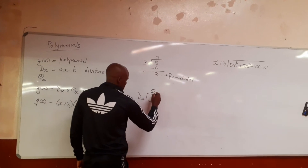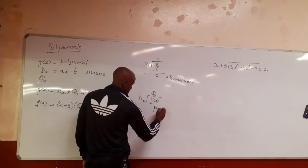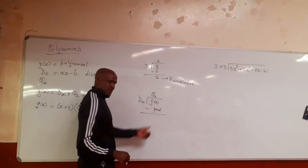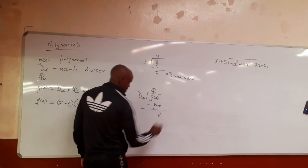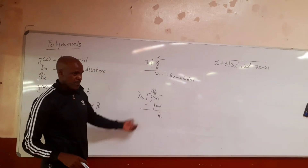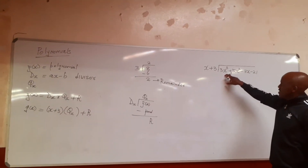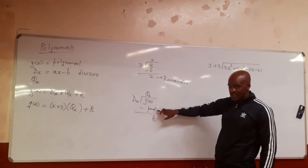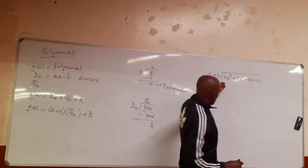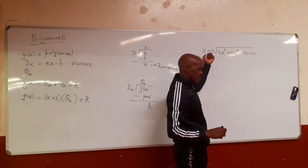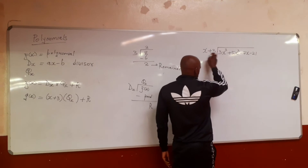Here we have our bracket, our product after multiplying, and then we subtract the product from the polynomial. The answer we obtain we call the remainder — same thing as before. You start by dividing, then after dividing you multiply to find the product, and then you subtract. For dividing, we only use x to divide, but to find the product you use both terms.